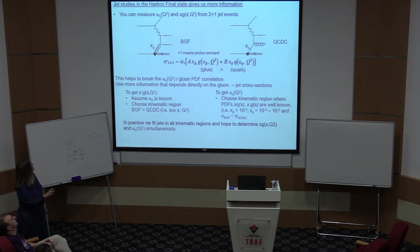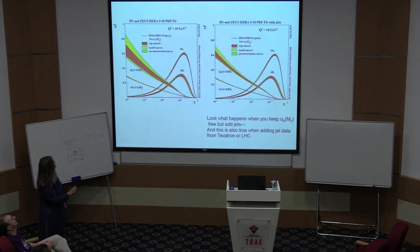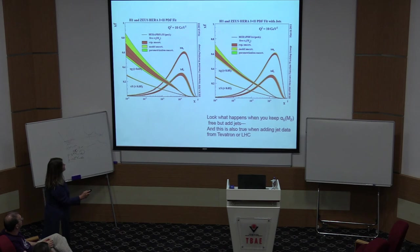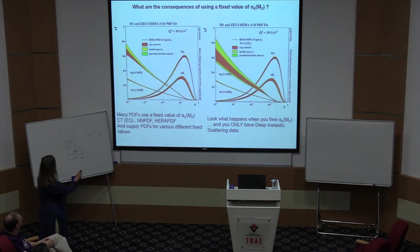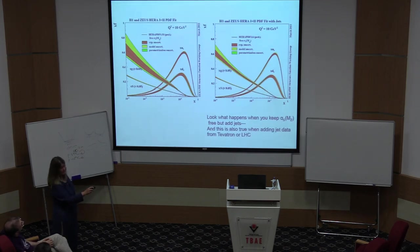So, if you're interested in the gluon only, you assume you know alpha S and choose a kinematic region where this process dominates, like at low X. Or if you're interested in alpha S, you choose a kinematic region where you think the PDFs are reasonably well known, at higher X. But in practice, what we'll really do is fit everything all at once to try and get some extra information about the glue. And this is a technique, I'm using it here just with deep inelastic scattering here at jets, but this has been used with all the jets from the colliders as a way of determining alpha S, as a way of sharpening up your gluon.